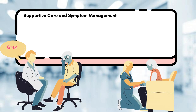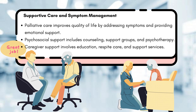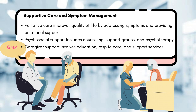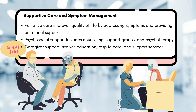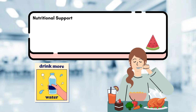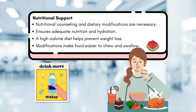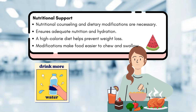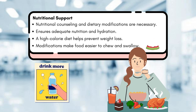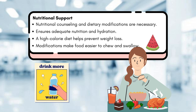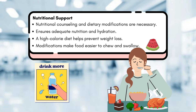Supportive care is essential for managing the multifaceted symptoms of Huntington's disease. Palliative care focuses on enhancing quality of life by addressing symptoms, providing emotional support and facilitating advanced care planning. Nutritional support is also vital — nutritional counseling and dietary modifications ensure adequate nutrition and hydration. A high-calorie diet can help prevent weight loss, and food modifications make it easier to chew and swallow.